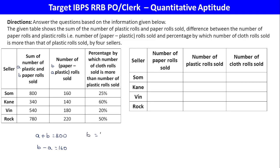Paper rolls B equals 480. So plastic A equals 320. Then cloth is 25% more than plastic, so 25% of 320 is 80, meaning cloth equals 400. The total table row is now filled with these values.